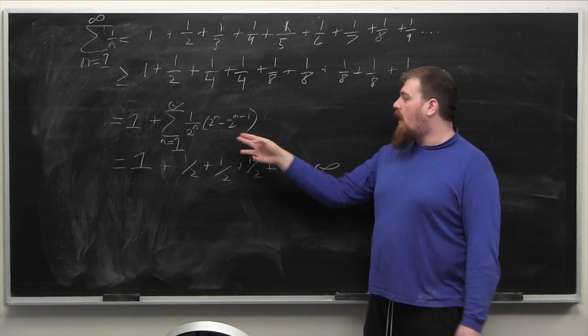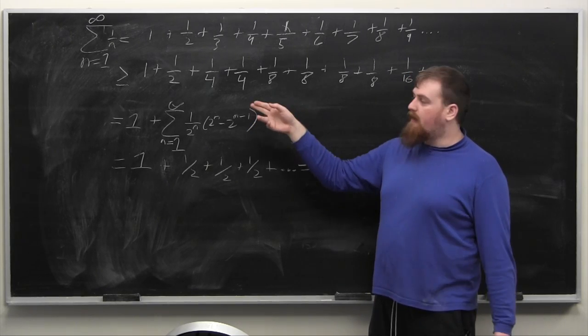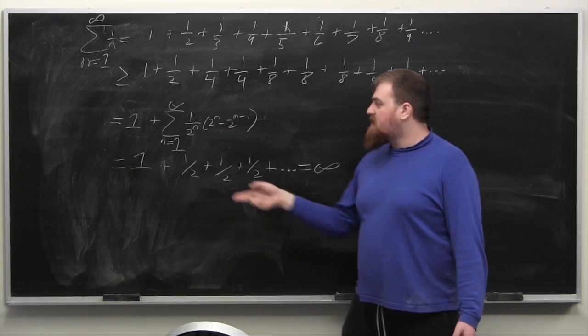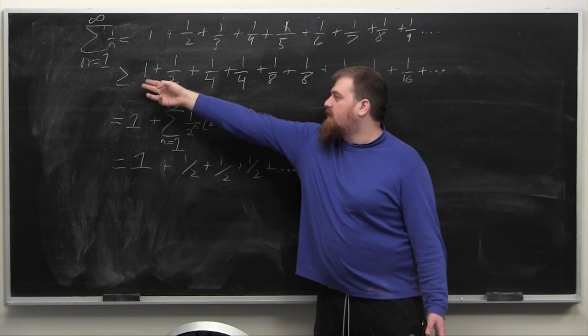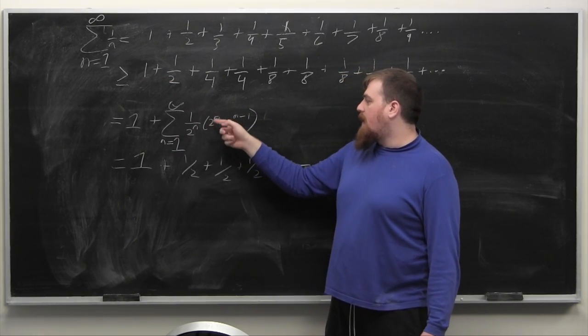There are 2 to the n minus 2 to the n minus 1 instances of the reciprocal of 2 to the n in this sum. So we get the sum that is equal to 1 in the start plus sum from n equals 1 to infinity of 1 over 2 to the n times this.